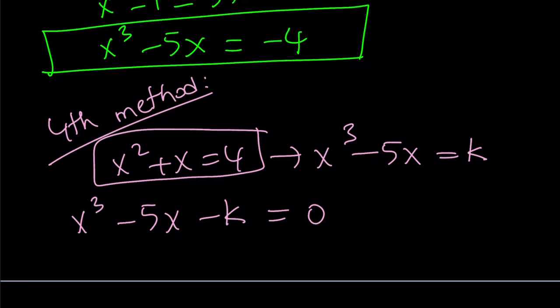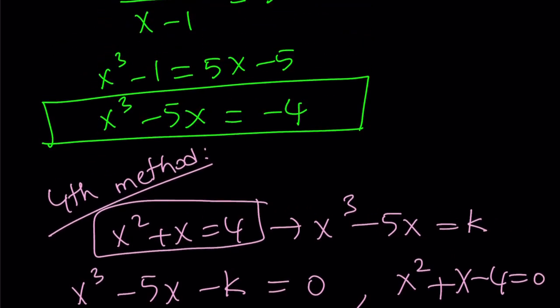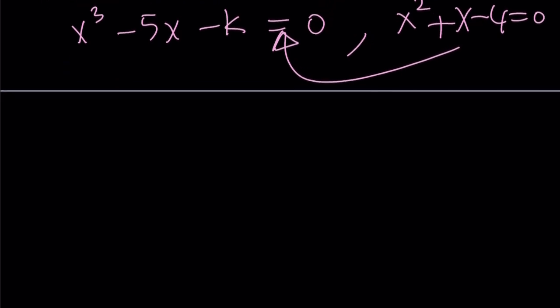What is that supposed to mean? It means that this cubic shares roots with the quadratic. In other words, the cubic must be divisible by the quadratic. What quadratic? I'm talking about x squared plus x minus 4. If they have common roots, because this kind of implies this, but the cubic may have extra roots, obviously. That's cubic.